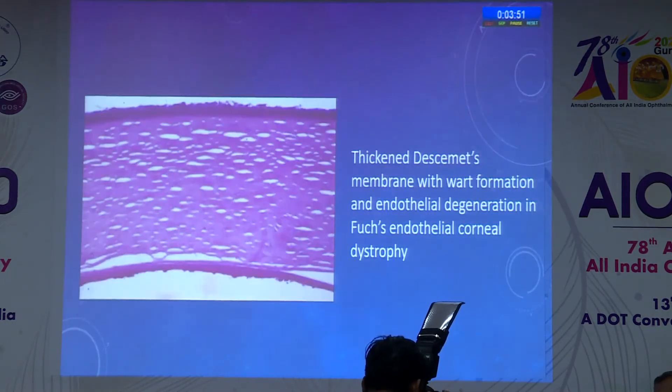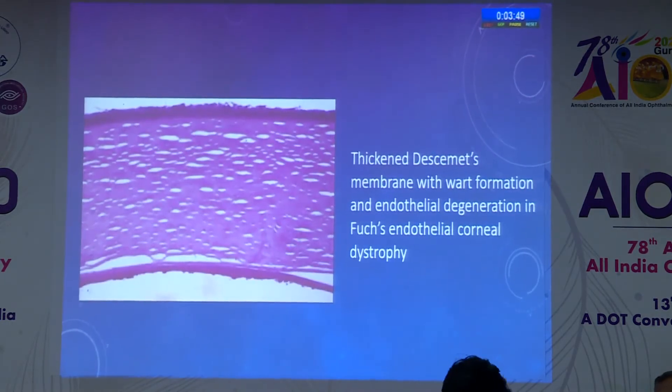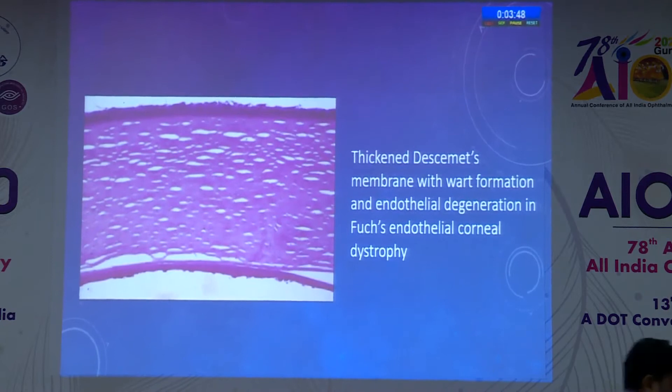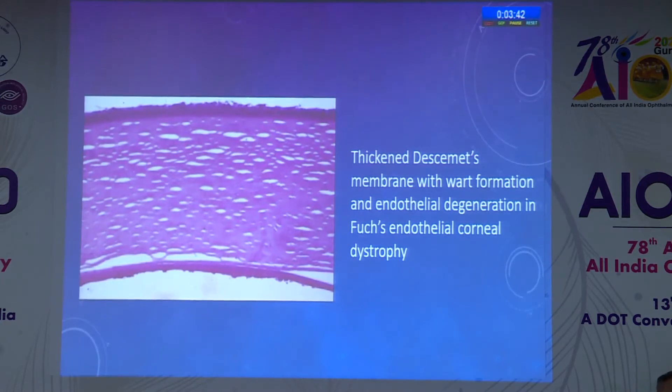This is a picture of a patient with Fuchs endothelial corneal dystrophy, H&E staining, showing thickened Descemet's membrane with wart formation and endothelial degeneration.